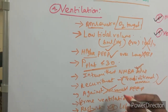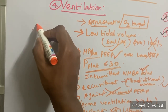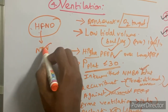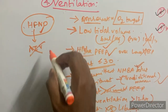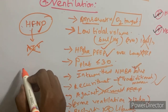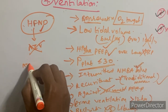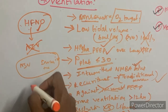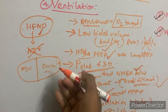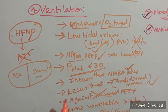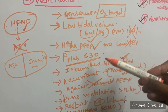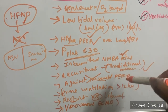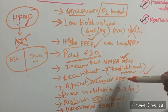High-flow nasal oxygen therapy is preferred over non-invasive ventilation in sepsis patients. There is insufficient evidence to show that NIV is better than invasive ventilation. If the patient is on invasive ventilation, targets include: low tidal volume, plateau pressure below 30 cmH2O, intermittent NMBA boluses, traditional recruitment maneuvers, and prone ventilation for more than 12 hours. If all fails, veno-venous ECMO is the rescue strategy.